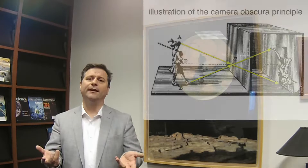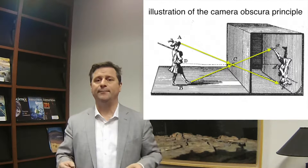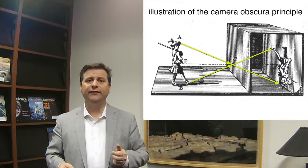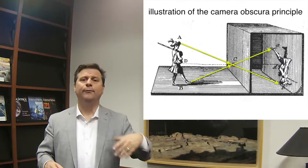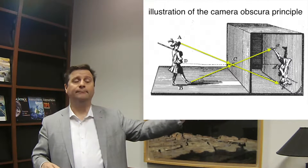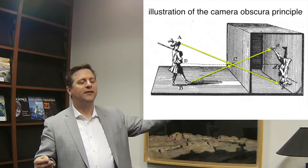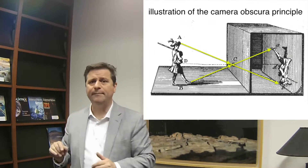Ibn al-Haytham determined how vision works by studying the camera obscura. In the intense sunlight of the Iraqi desert, he would go inside a very darkened tent — as dark as possible — and make a tiny hole on one side so that light could enter only as a single beam. He observed that when the rest of the tent was extremely dark, the hole acted as a camera obscura.